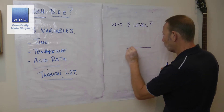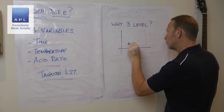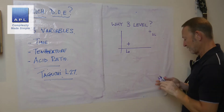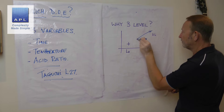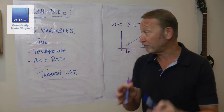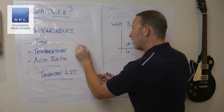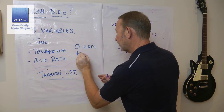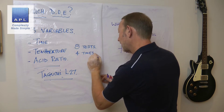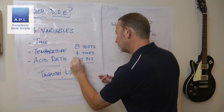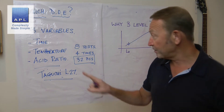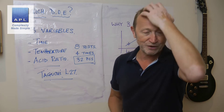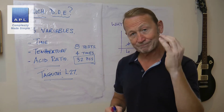With a two-level design you test at a low point and a high point, and normally we fill that in with a straight line. If I do two-level, I only have to do eight setups. If I repeat them four times, I end up with just 32 data points — much better. The four-time repetition also gives me much more information about the variability in the process.